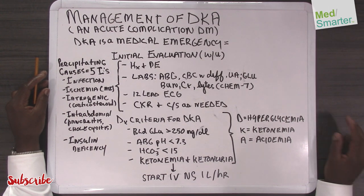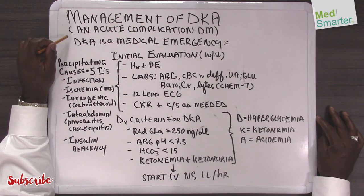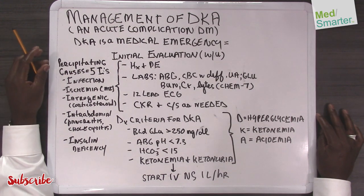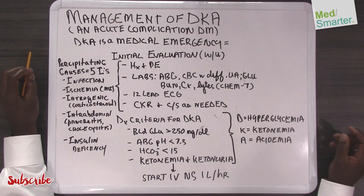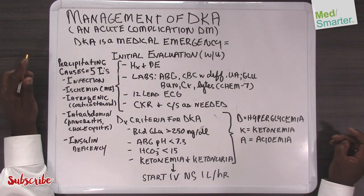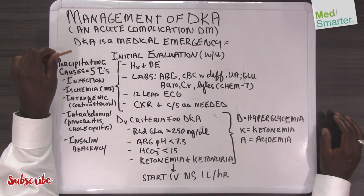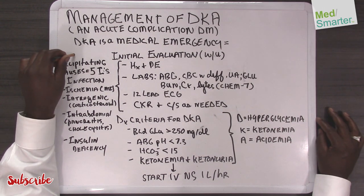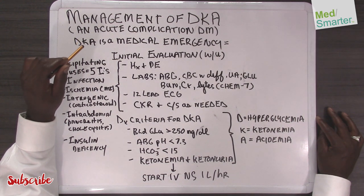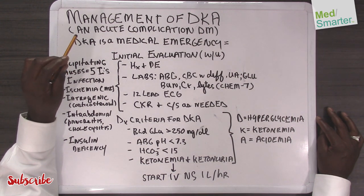Diabetic ketoacidosis, or DKA, is an acute complication of diabetes mellitus. It most commonly occurs in type 1 diabetics, but there is a subpopulation of type 2 diabetics that we call ketosis-prone type 2 diabetes that DKA can also occur in. This subpopulation of type 2 diabetics are usually Black men with obesity and new onset diabetes.